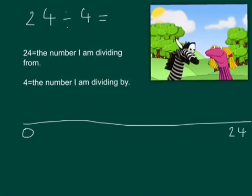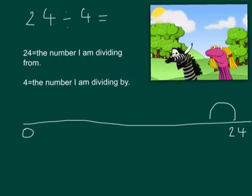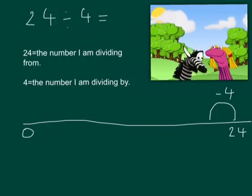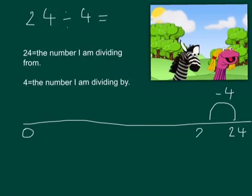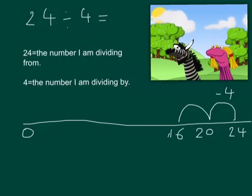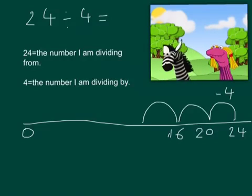Now, we subtract from 24 the number I am dividing by, which is 4, until we reach 0. So, we do 24 subtract 4, which gives us 20. Then we do 20 subtract 4, which gives us 16. Then we do 16 subtract 4, which gives us 12.